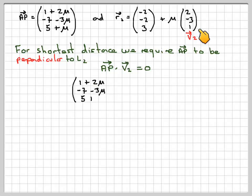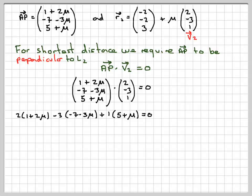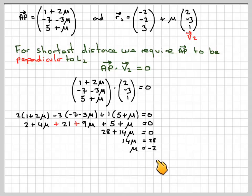So we need to do 2 times 1 plus 2mu, minus 3 times minus 7 minus 3mu, plus 1 times 5 plus mu equals 0. Expanding: 2 plus 4mu plus 21 plus 9mu plus 5 plus mu equals 0. That's 28 plus 14mu equals 0, so 14mu equals negative 28, and mu equals minus 2.